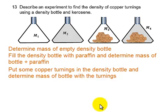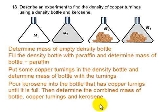Step 4 is a continuation of step 3. We just need to pour kerosene into the container from step 3, so that by finding M4, we will be determining the mass of the density bottle, copper turnings, and the kerosene that we have just added. It is obvious that we can calculate the mass of the kerosene just added. M3 is the mass of copper turnings and the density bottle, while M4 is the mass of the copper turnings, the density bottle, and kerosene. So by finding the difference between M4 and M3, we will be getting the mass of the kerosene above the copper turnings.